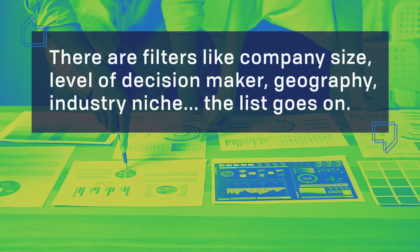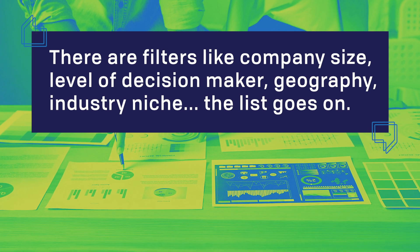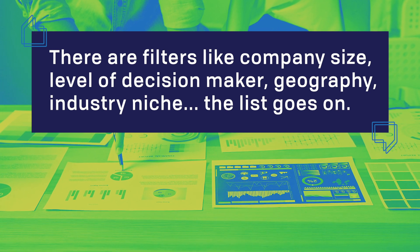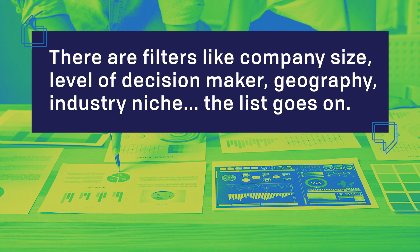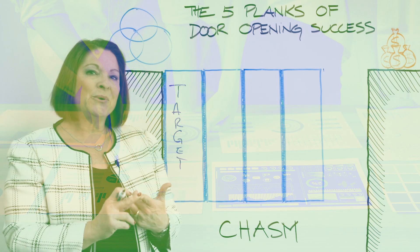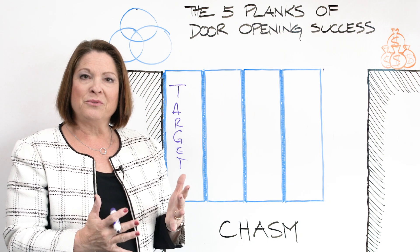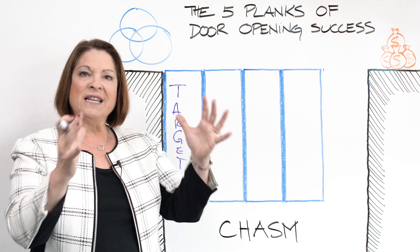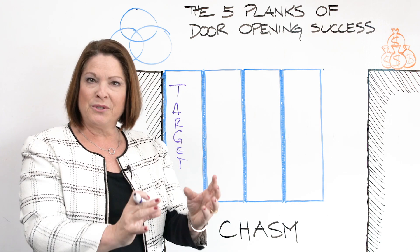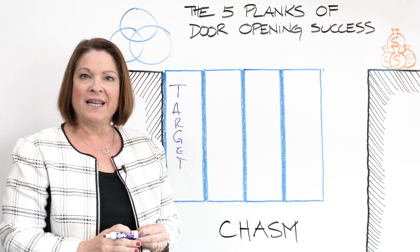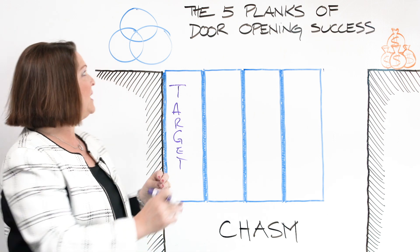There are filters like size of company, level of decision maker, geography, industry niche, and that list goes on. But there are three additional filters that we use in order to narrow the playing field down to get to those people who will say yes sooner.